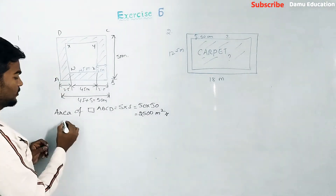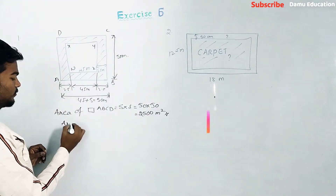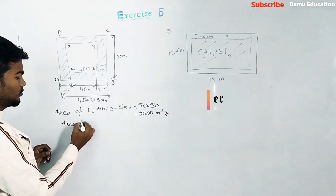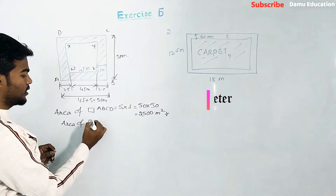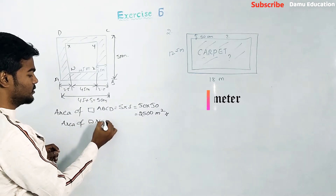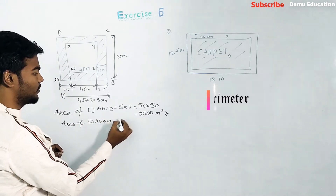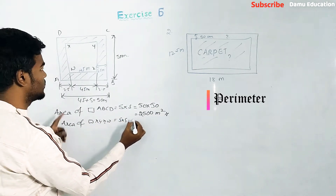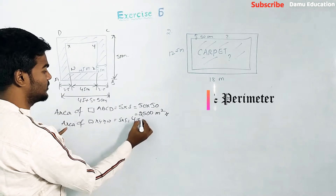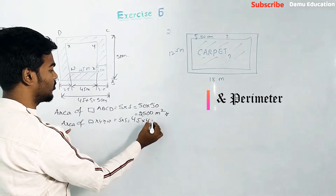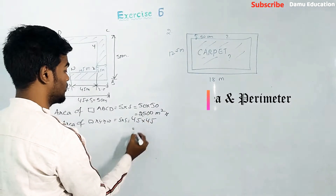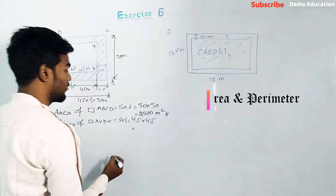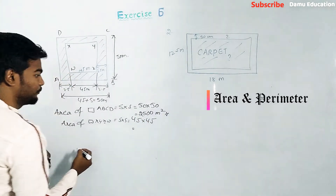Then the area of square XYZW equals side times side, which is 45 times 45, giving 2025 meter square.